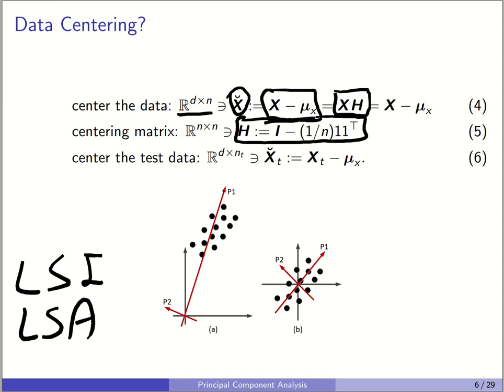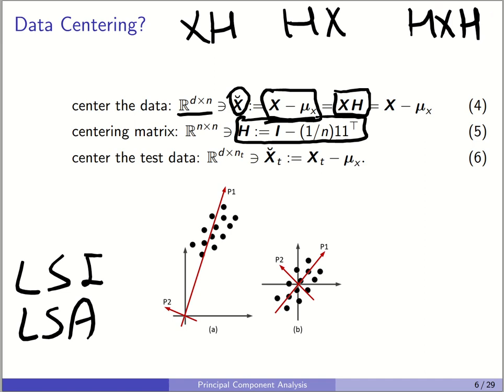The vector 1 here refers to a column vector of ones, and I is the n by n identity matrix. The centering matrix XH centers the columns of matrix X. HX centers the rows of matrix X. HXH double-centers the matrix X — it subtracts the row mean, subtracts the column mean, then adds back the total mean, because the total mean was subtracted twice. We also center the test data, but using the mean of training data, because when applying PCA you are not supposed to have access to the test data. We call it X-breve_t, and it is d by n_t.